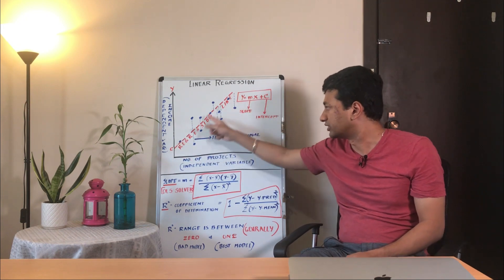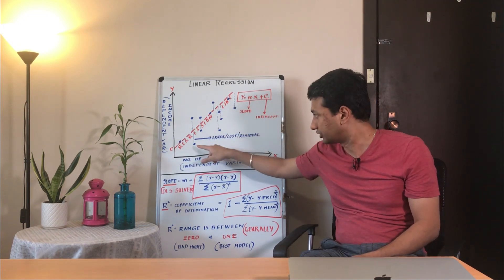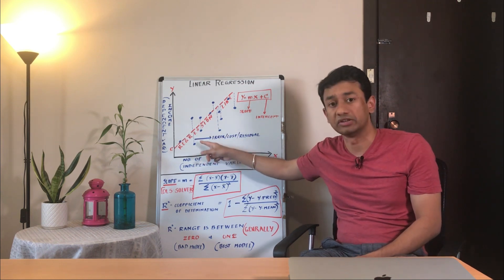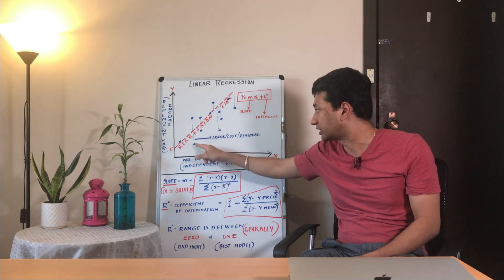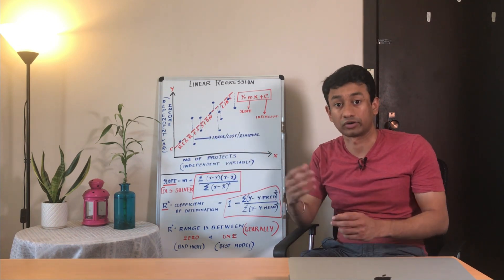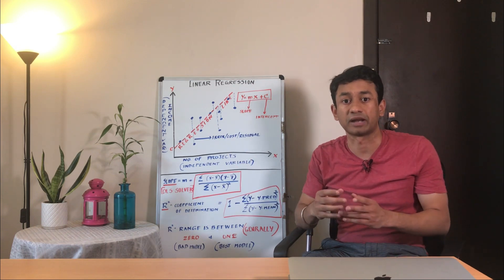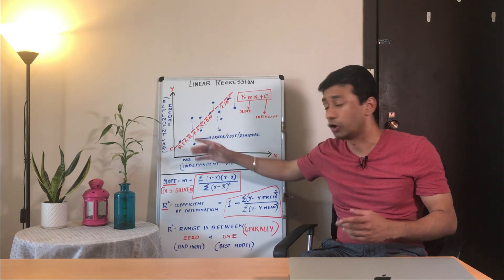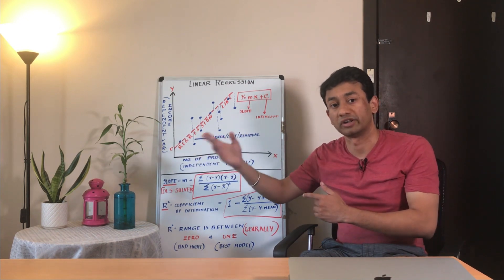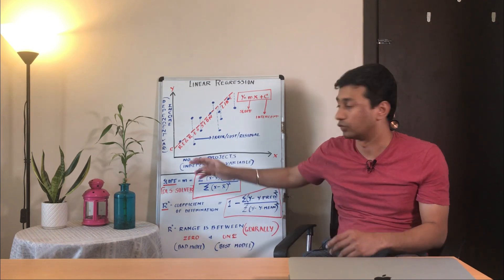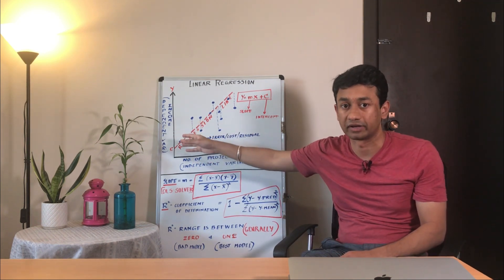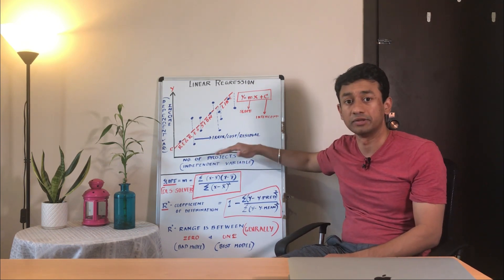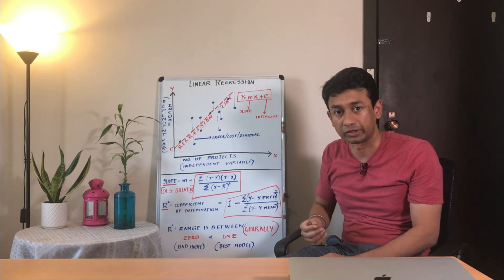All of our predictions lie on the regression line shown in red. The blue dots are the actual values. The vertical distance between each blue dot (actual value) and the corresponding point on the regression line is the error, cost, or residual. These terms are used to measure how bad the model is — depending on how far the actual values are from the predicted values. This residual or error function is used to measure the accuracy of the model.